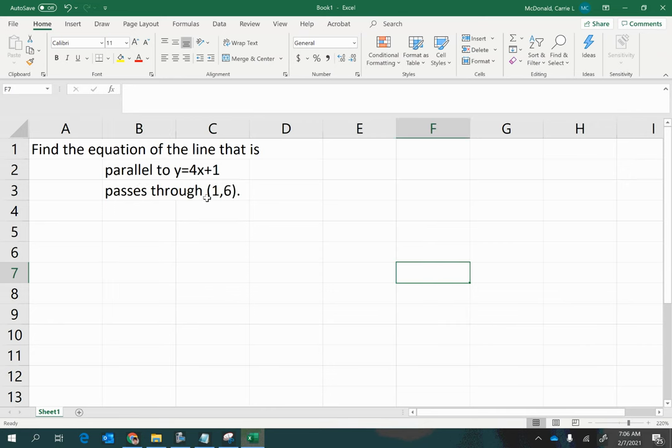Since we have a point and we have a slope, we'll use the point-slope formula. Now, I said we have a slope, but it's not given explicitly here. It's given implicitly when we are told that this line should be parallel to the line y equals 4x plus 1.